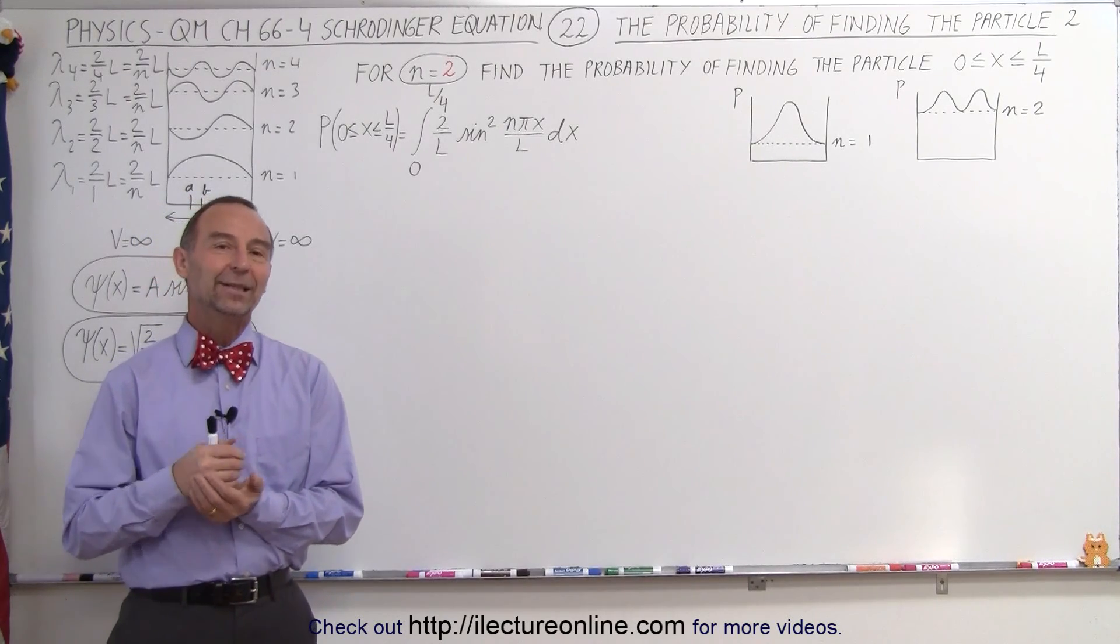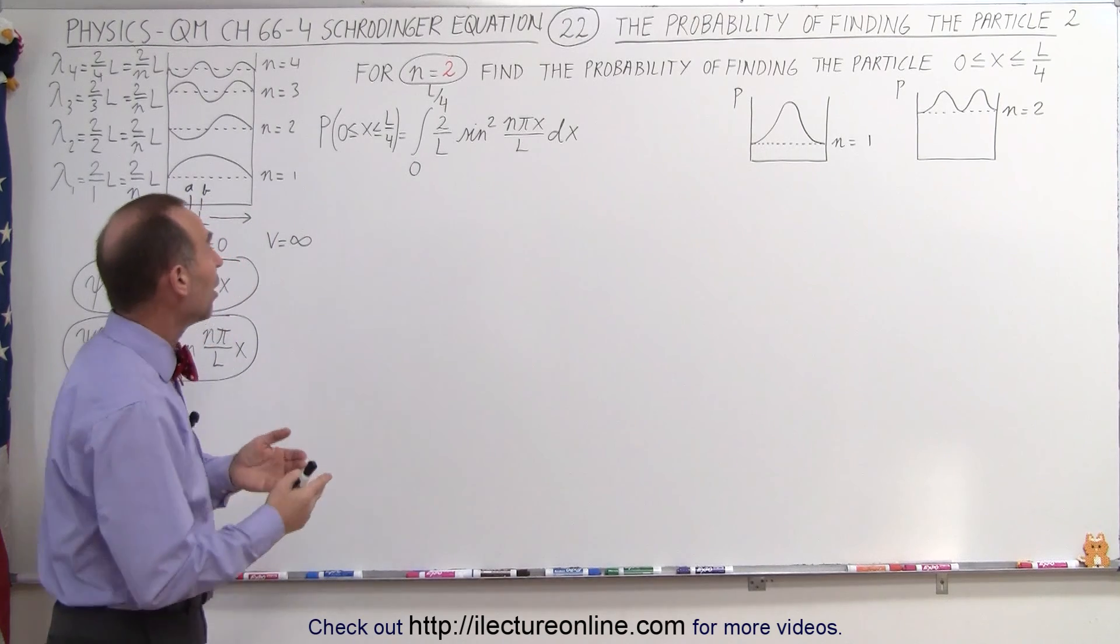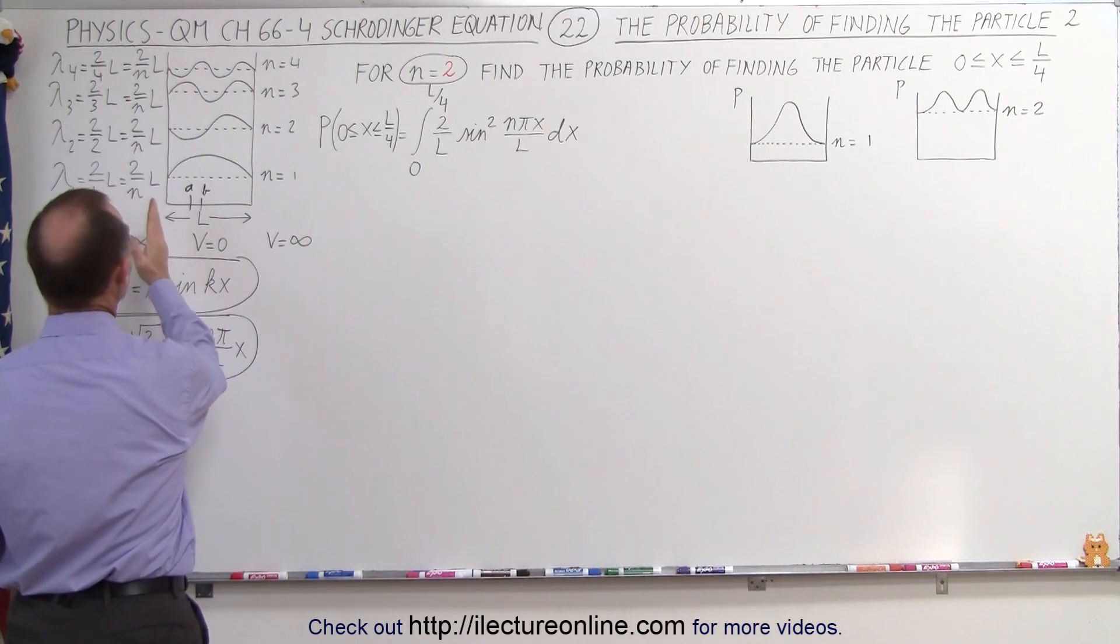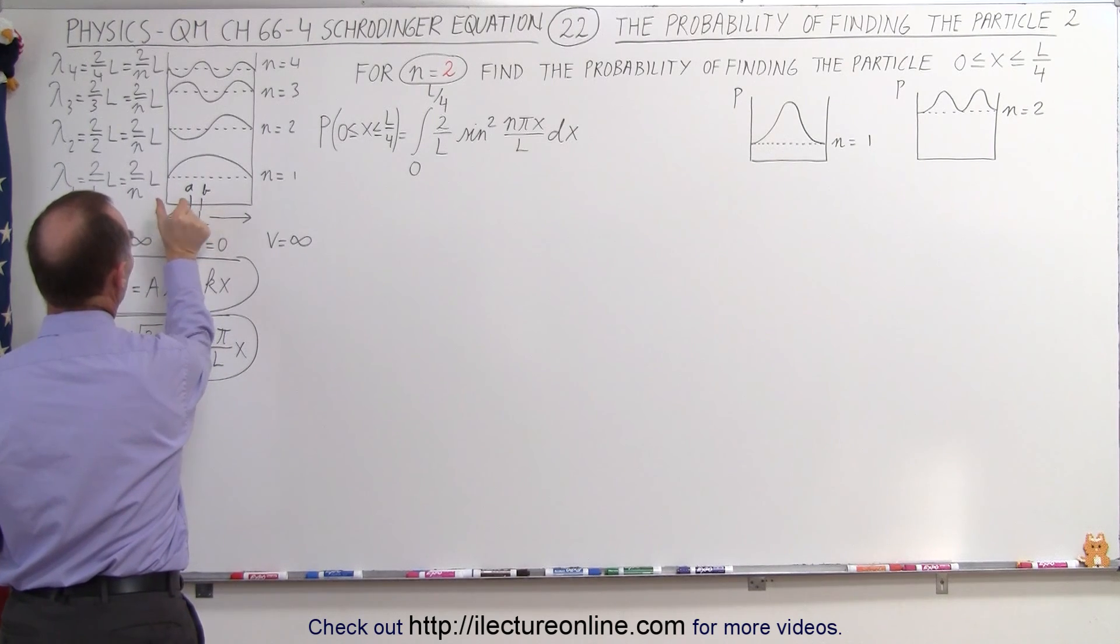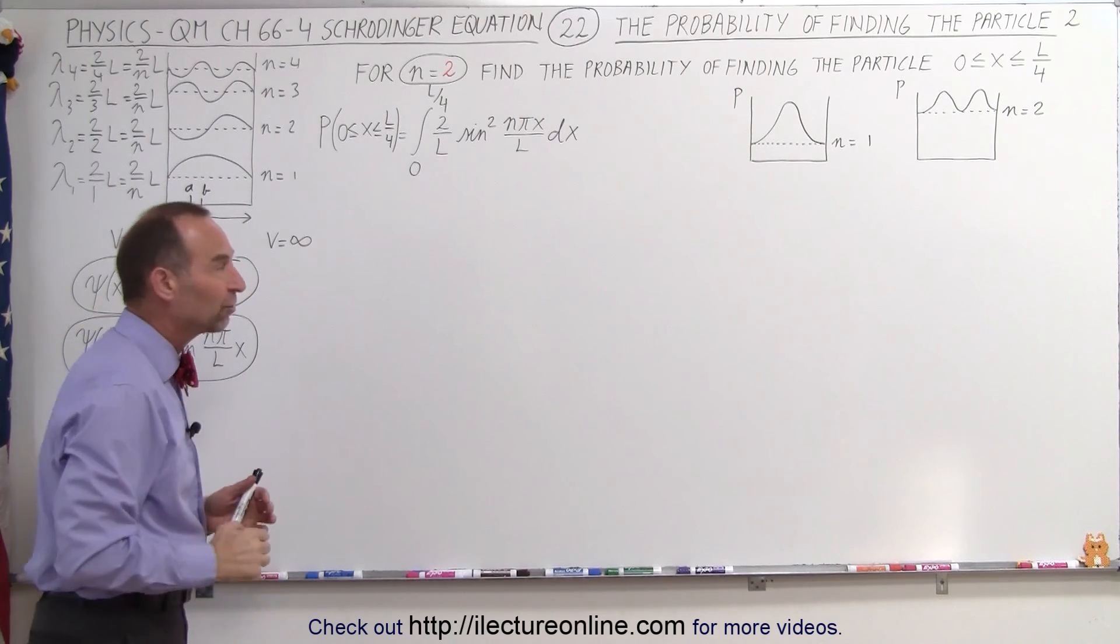Welcome to ElectronLine. In the previous video we found the probability of finding a particle between x equals 0 and x equals L over 4 in the first one quarter the distance from one side to the other side of a one-dimensional well.